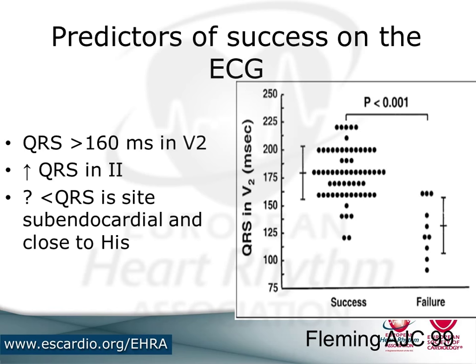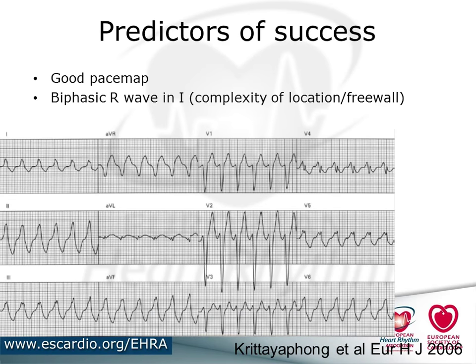Regarding predictors of success: one study trying to predict success based on ECG found that the bigger and wider the QRS in V2, and the more positive the QRS, the more likely success is. This probably reflects the fact that a wider QRS is more likely to be free wall and therefore easier to access, whereas the septum can be quite difficult to navigate through the tricuspid annulus, and you may also fail because it's parahissian. Another study suggested that a very good pace map unsurprisingly predicts success.